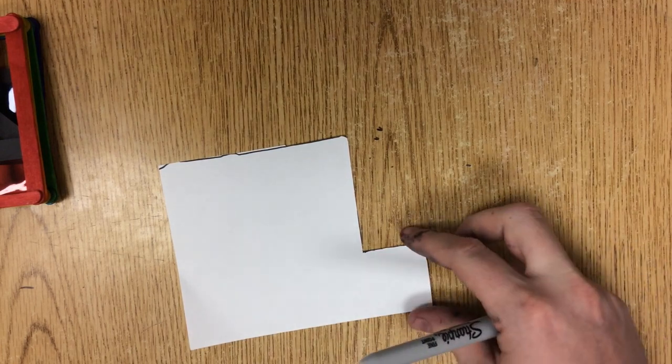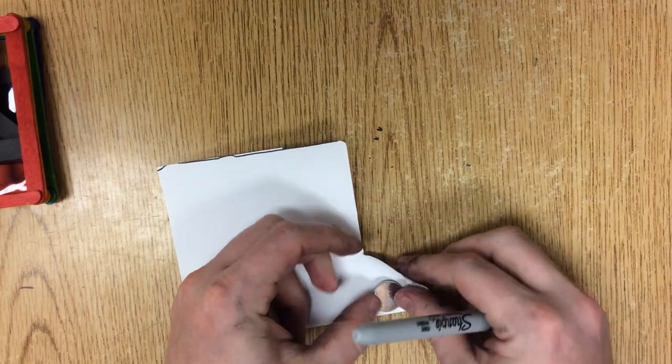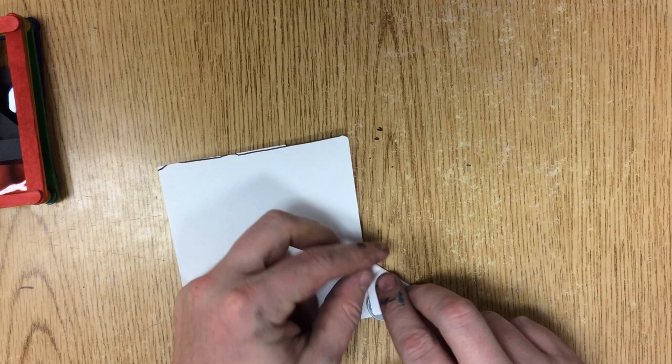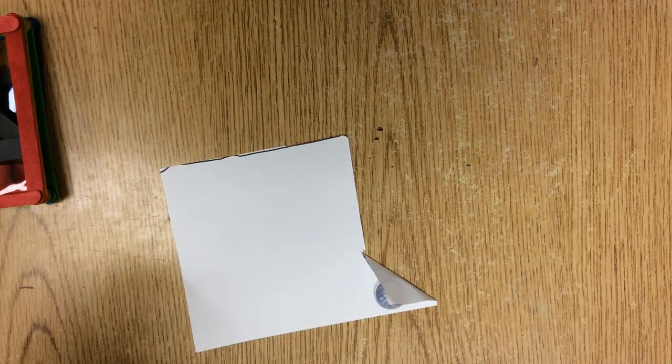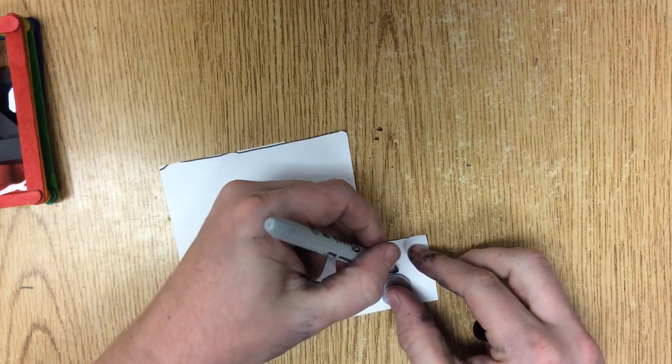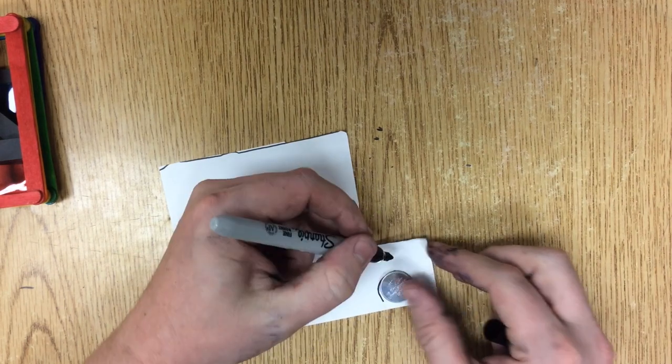So the first thing I'm going to do is figure out where my battery is going to be. If I fold this at an angle to make my little switch, I'm going to need something, my battery might go right about here.